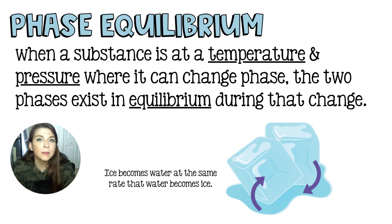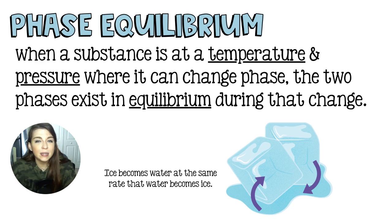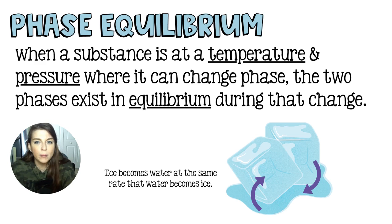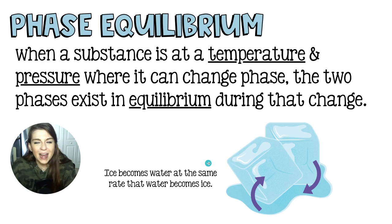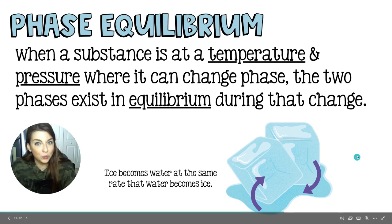We can have equilibrium in a chemical reaction, but we can also have equilibrium during a phase change — we call that phase equilibrium. Phase equilibrium is when a substance is at a temperature and pressure where it can change phase, and those two phases exist in equilibrium during that change. So at the same time that ice is melting and becoming water, water is freezing and becoming ice — and that results in equilibrium.